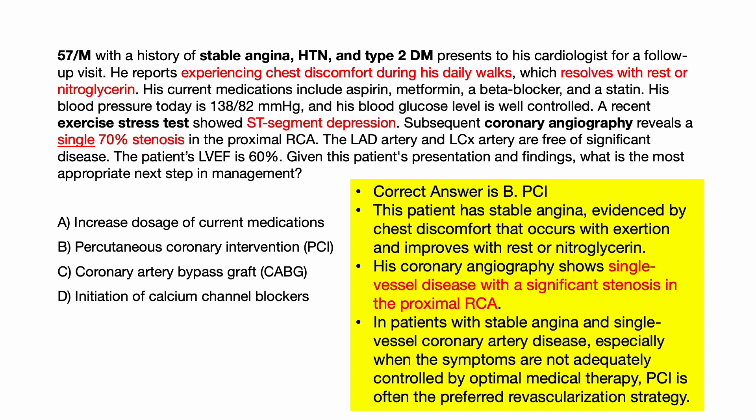A 57-year-old male with a history of stable angina, hypertension, and type 2 diabetes presents to his cardiologist for a follow-up visit. He reports experiencing chest discomfort during his daily walks, which resolves with rest or nitroglycerin. His current medications include aspirin, metformin, beta blocker, and statin. His blood pressure is 138 over 82 and his blood glucose is well controlled. A recent exercise stress test showed ST segment depression. Subsequent coronary angiography reveals a single 70% stenosis in the proximal RCA; the LAD and left circumflex artery are free of significant disease. The patient's LV ejection fraction is 60%. What is the most appropriate next step in management?